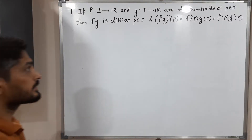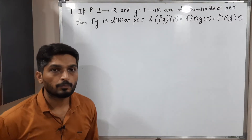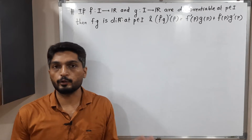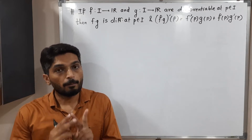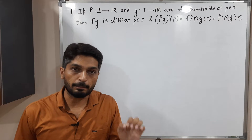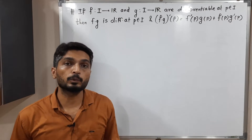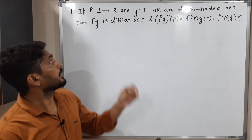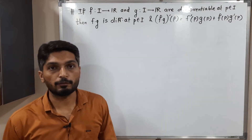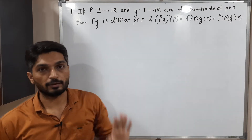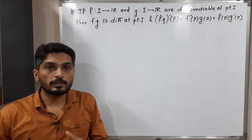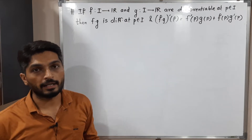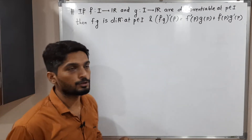Hi everyone, let us discuss this result. We have two real-valued functions f and g, both differentiable at p. We have to prove that their product f into g is also differentiable, and find its derivative.